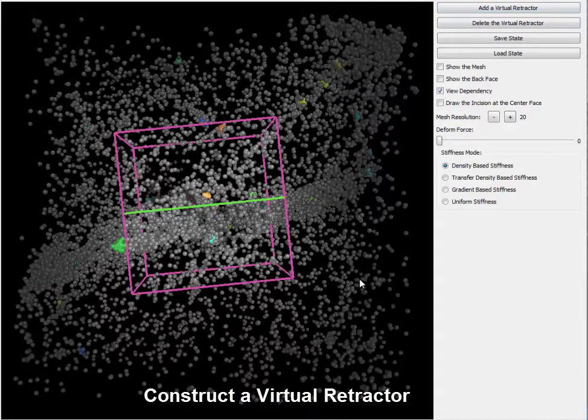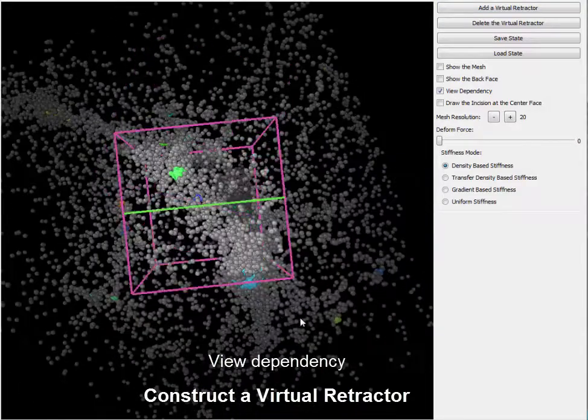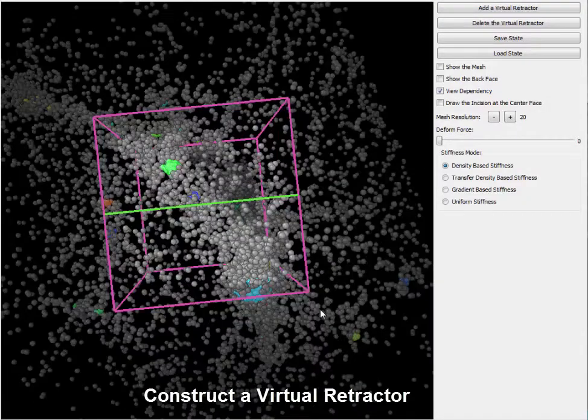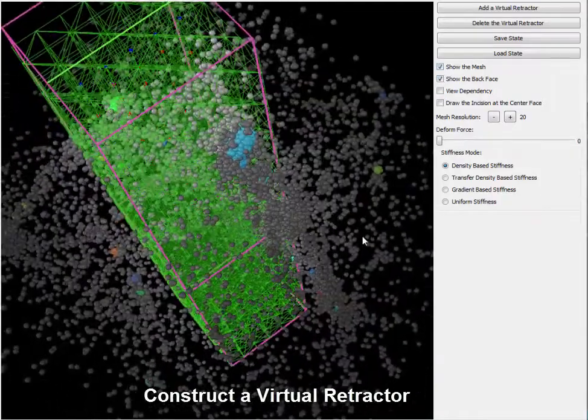First, using a cosmological dataset, we demonstrate how we construct a view-dependent virtual retractor. We can turn off the view dependency and see the whole structure of the retractor and the mesh.